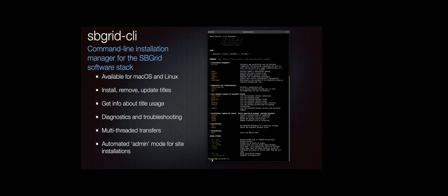A big plus is that we can do multi-threaded transfers. So if you install a big set of tools — Phenix and Rosetta and CCP4 — those all run in parallel and you can get it all at once. Built into this is also an automated admin mode where you can set it up as a recurring cron job and it will check for updates, check for new titles, install them, remove the old obsoleted ones, and you can just let it run. This is particularly great for Linux servers. Because it's surgical about the updates, it just gets what you need, so updates are quick. You can run it in a rolling mode so your software is always up to date.